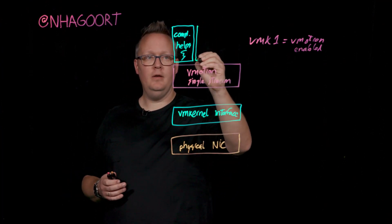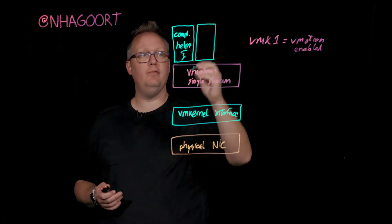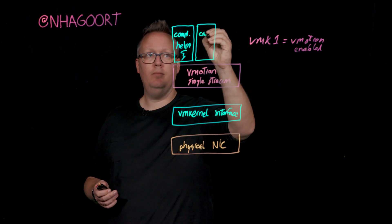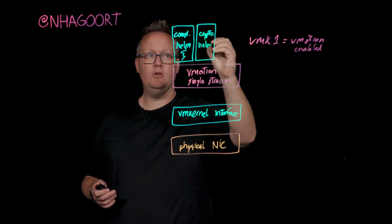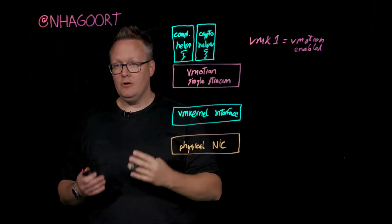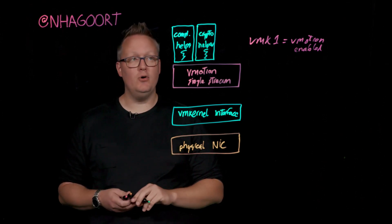The second one, since we now have encrypted vMotion as of vSphere 6.5, is the crypto helper. This is all about making sure that we have compute resources to encrypt and decrypt data when we are using encrypted vMotion.